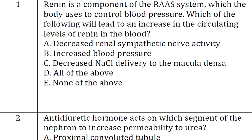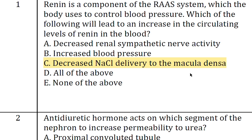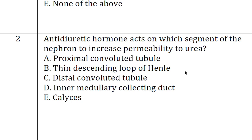The first question is: renin is a component of the RAS system which the body uses to control blood pressure. Which of the following will lead to an increase in the circulating levels of renin in the blood? From the options given, the correct answer is C: decreased NaCl delivery to the macula densa.